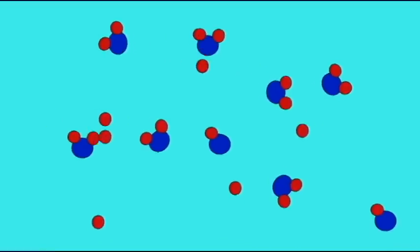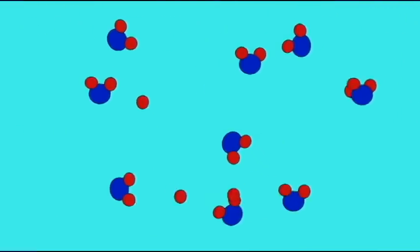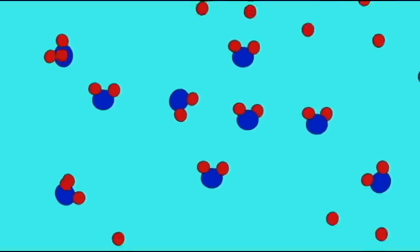And so anything which has a pH below 7, which is acidic, has a surplus of these red hydrogen ions.